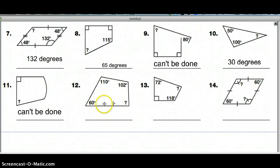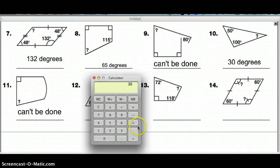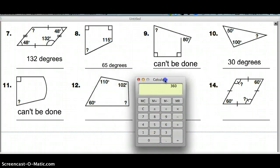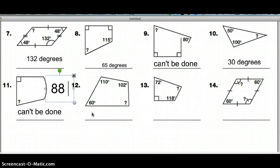Again, another quadrilateral, so we have 360 again. So 360, move this over. 110 plus 60 is 170, so I'm going to subtract 170. And then I'm going to subtract 102 to get my answer. This one's 88 degrees, a little bit smaller, where it belongs.